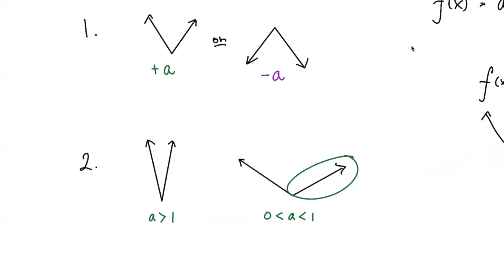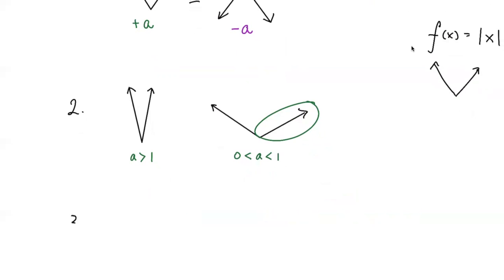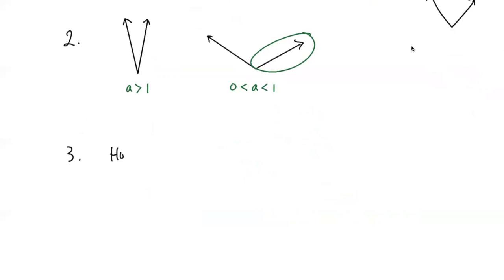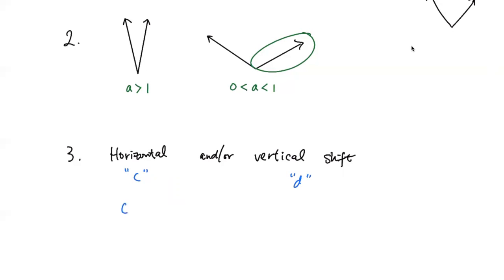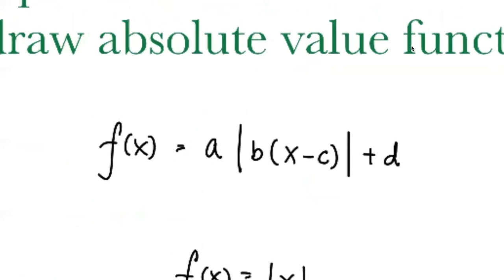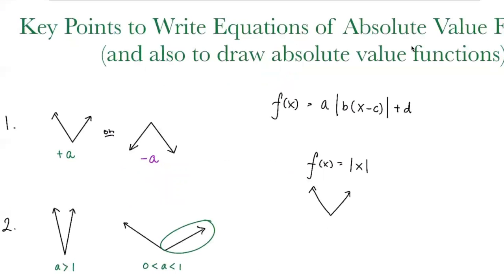The third point is whether the graph has a horizontal or vertical shift. The horizontal shift goes with the C value, and the vertical shift works with the D value. If it moves to the right, the C value is positive. Let's say it moves right two units, so C equals two. However, look at the original equation — it's X minus C, so you have to look out for that, because it's X minus C.